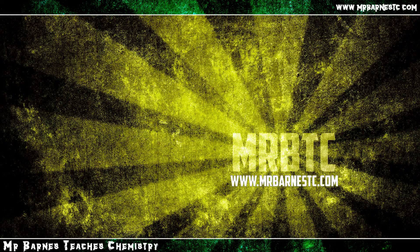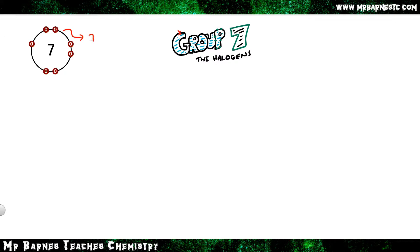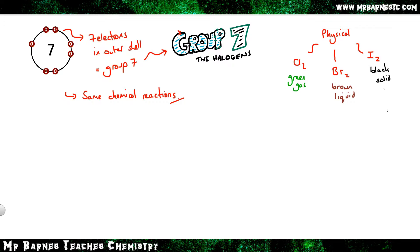The third section looks at the halogens. They are in group 7, so they have seven electrons in the outer shell, giving them the same chemical reactions. The physical properties to remember are: chlorine is a green gas, bromine is a brown liquid, and iodine is a black solid.